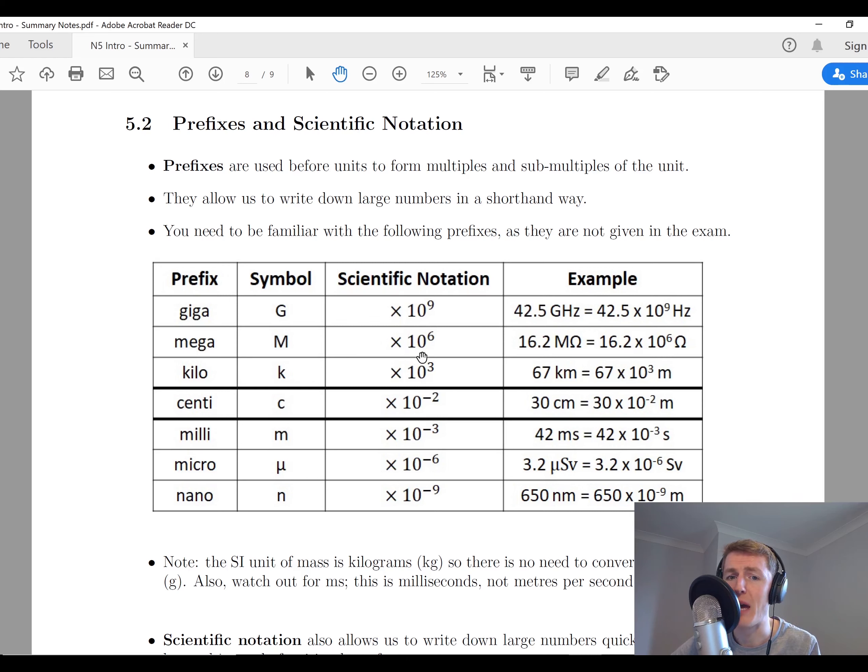Mega, this would be a capital M, times 10 to the 6, so that's times a million, would be 16.2 mega ohms would be 16.2 times 10 to the 6 ohms. Giga, the capital G, is times 10 to the 9, which would be 42.5 gigahertz would become 42.5 times 10 to the 9 hertz. So that's just some examples there.